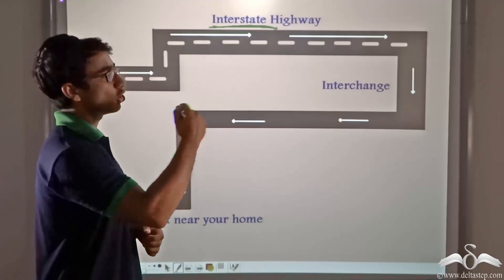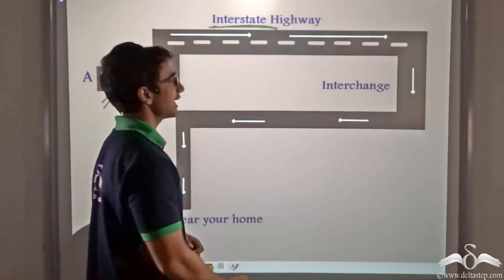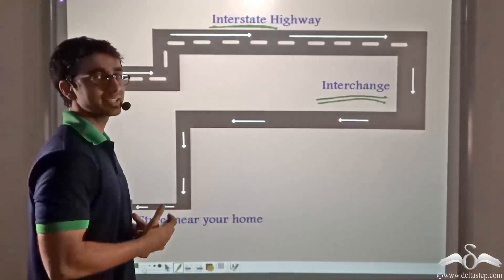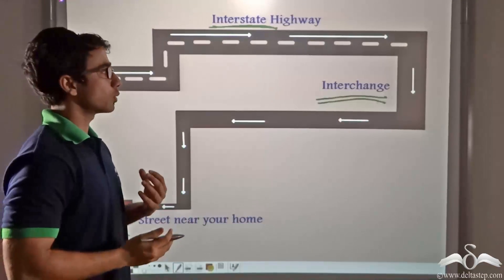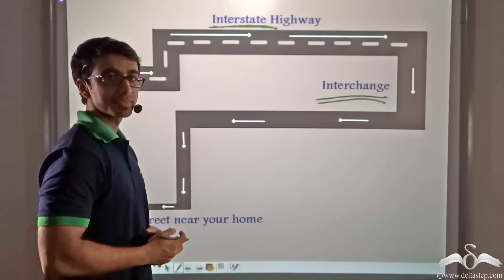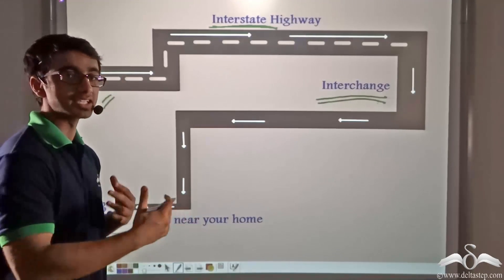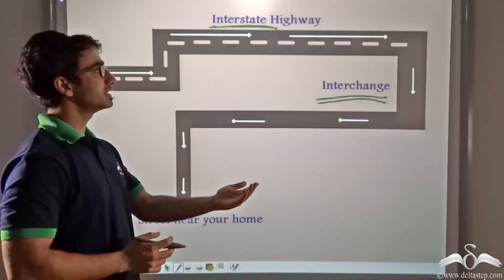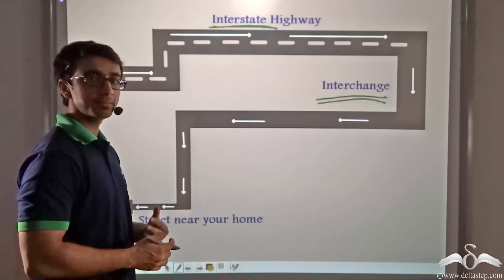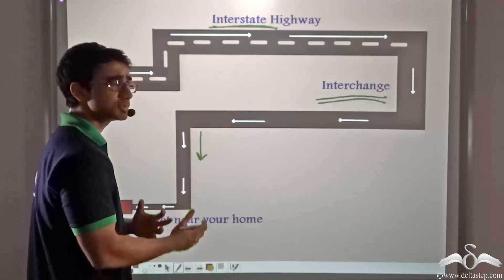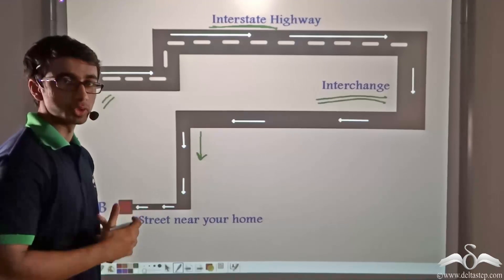Now once he gets off the highway, he comes on at the interchange. Now the interchange is the portion which connects the highway to the main city. So once the driver is on the interchange, his speed will reduce comparatively because the traffic flow is greater. So he drives along the interchange and he comes into the city and he gradually nears his home.